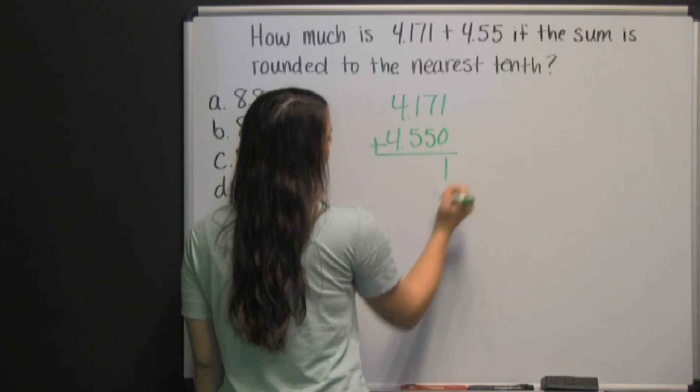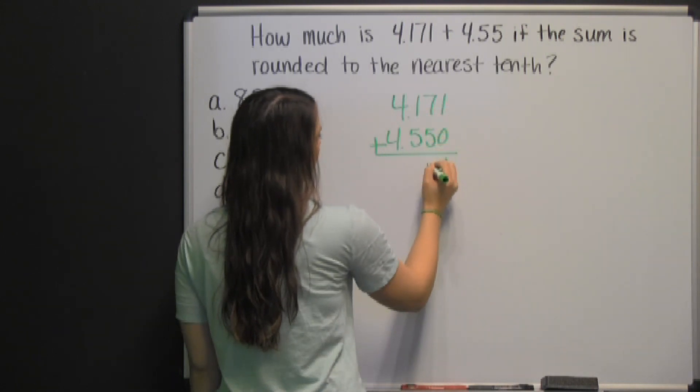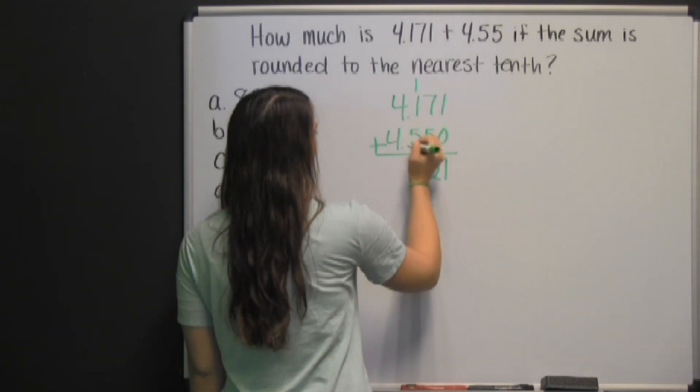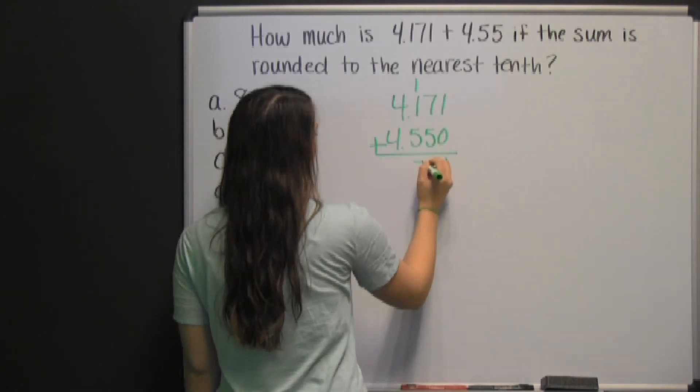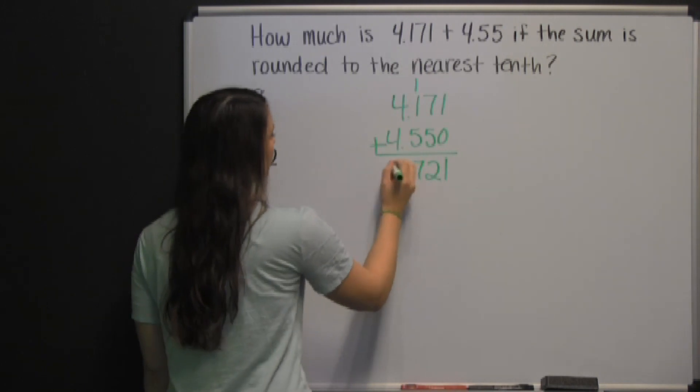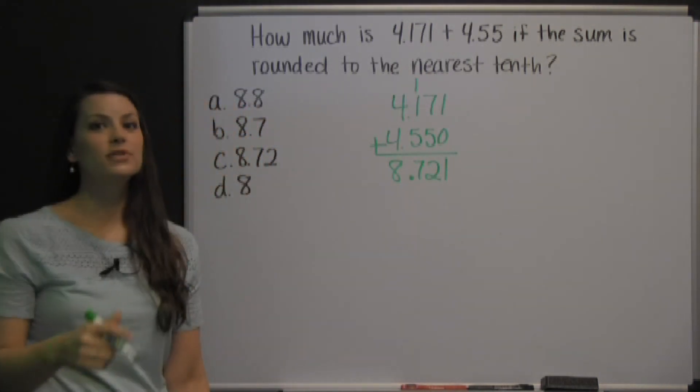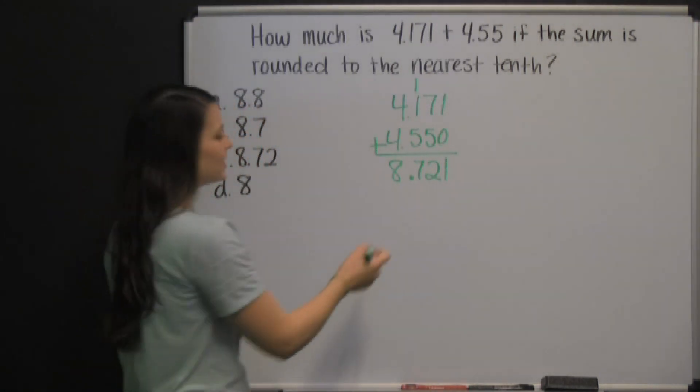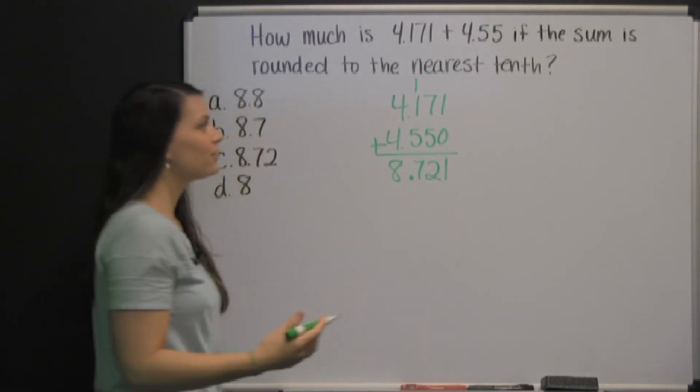One plus zero is one, seven plus five is twelve, carry the one, five, six, seven, bring down your decimal, and four plus four is eight. Our answer is 8.721, but we need to round it to the nearest tenths place.